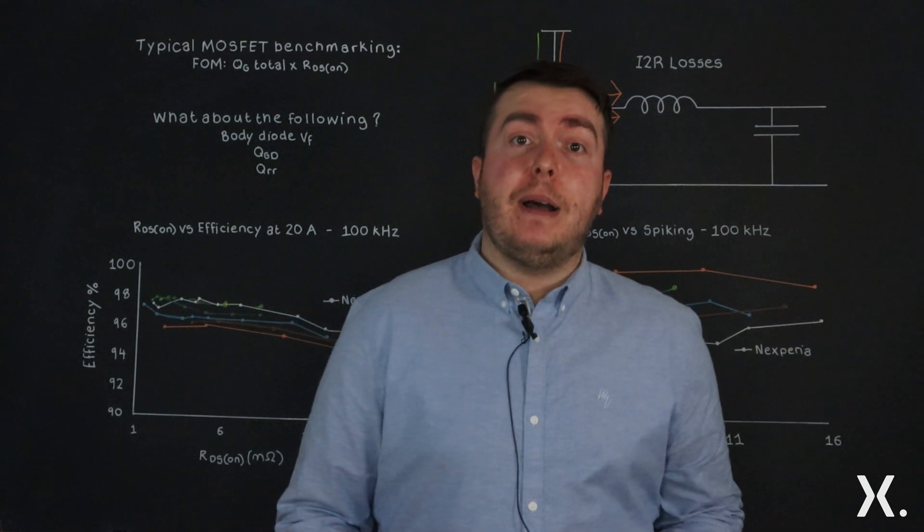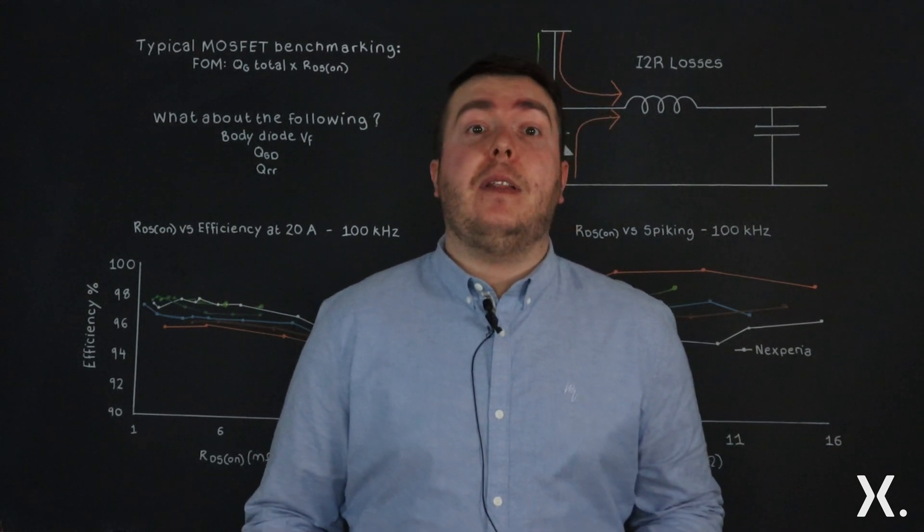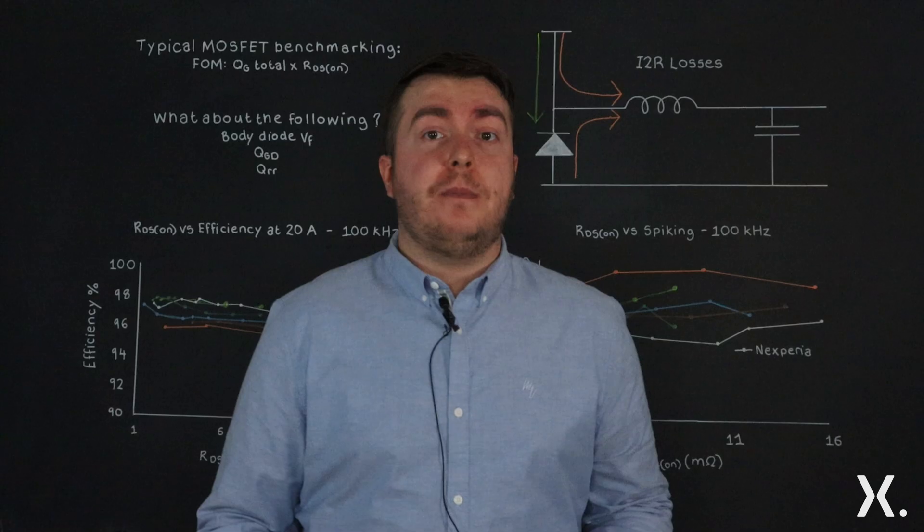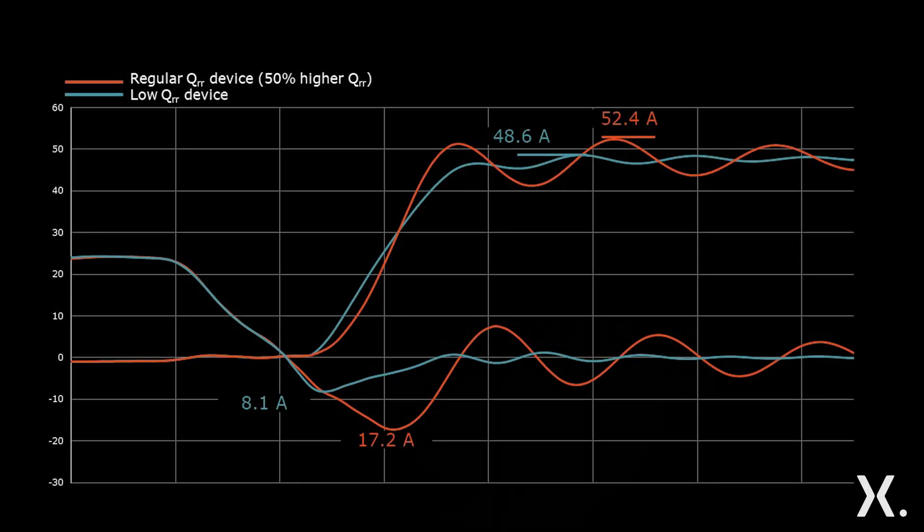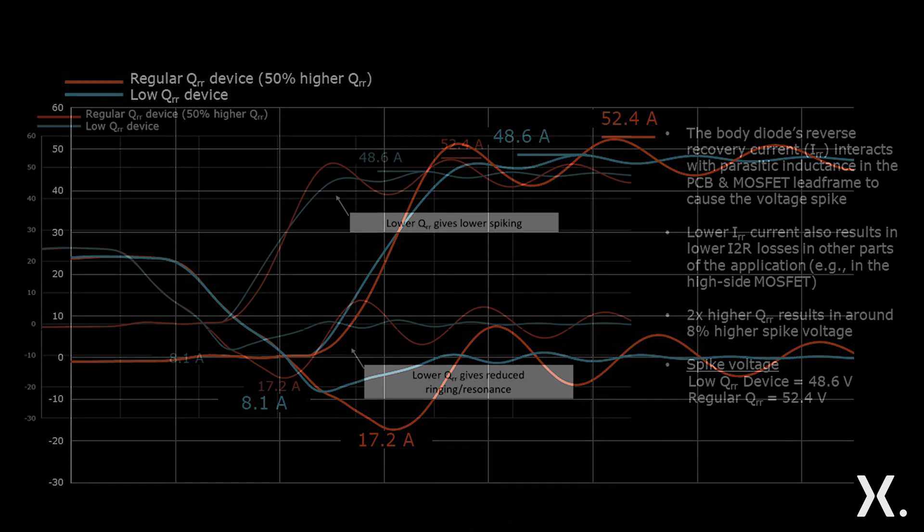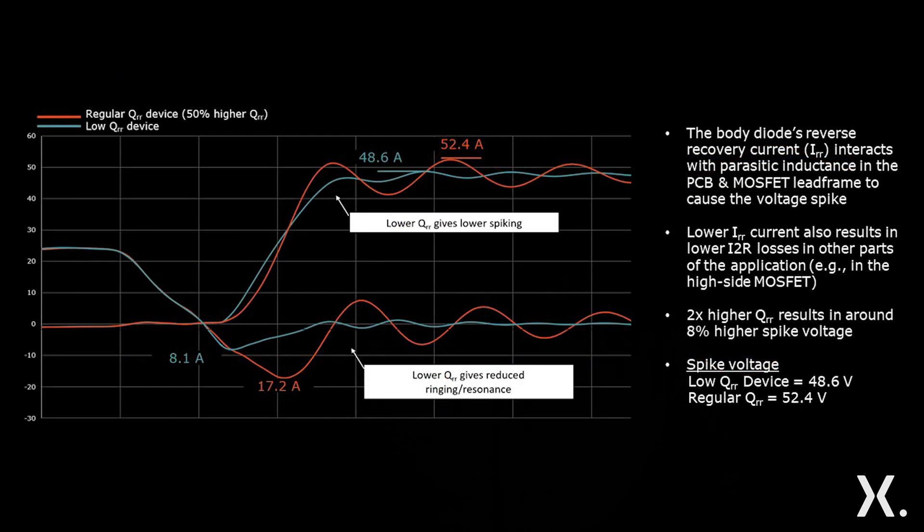So we've talked about the impacts of IRR. Now let's look at the impacts of the voltage. The IRR also interacts with parasitic inductance from the PCB and the MOSFET's lead frame to cause voltage spikes. By reducing the QRR and IRR, we lower spiking, therefore reducing energy loss and increasing efficiency.